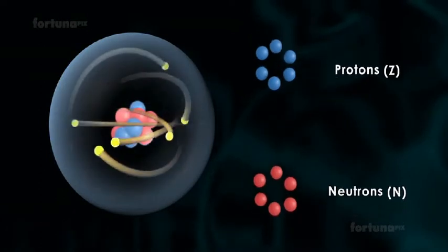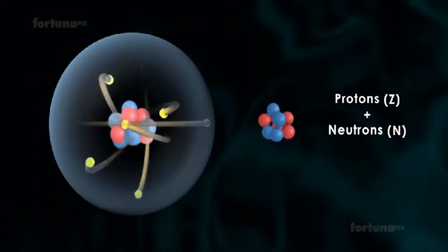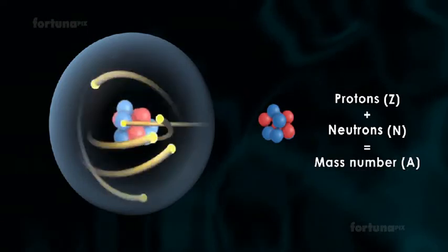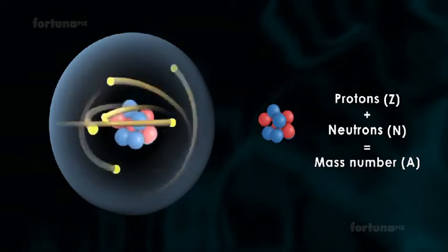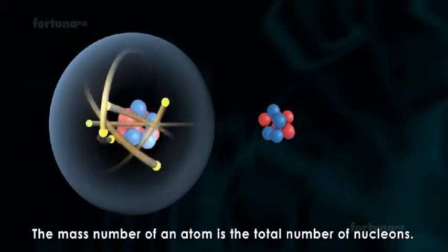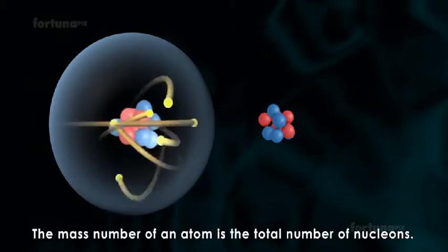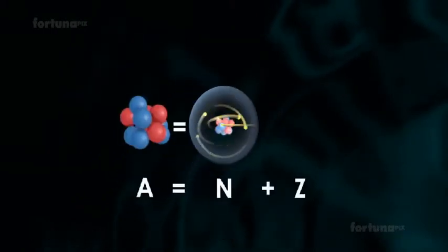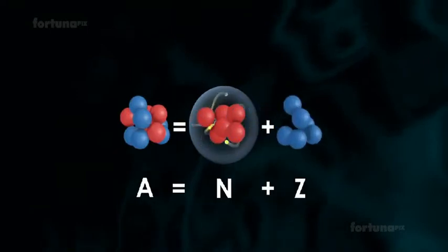The total number of neutrons and protons in the nucleus is known as the mass number, denoted by the letter A. The mass number of an atom is the total number of nucleons. A equals N plus Z.